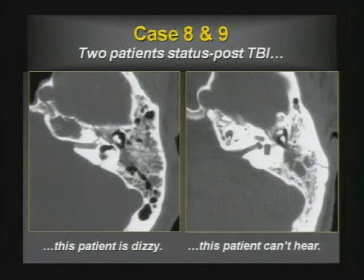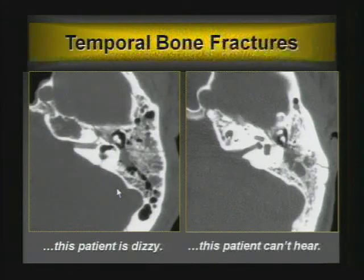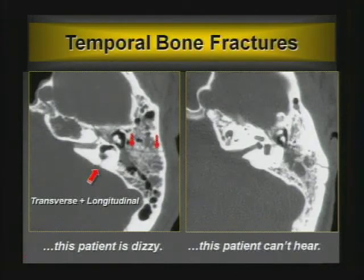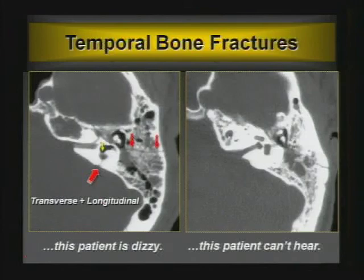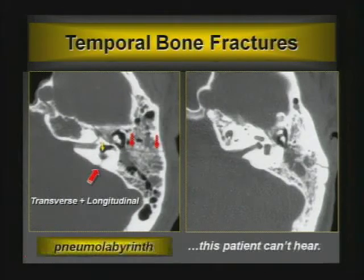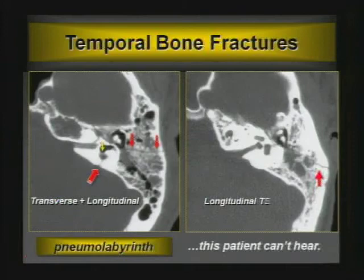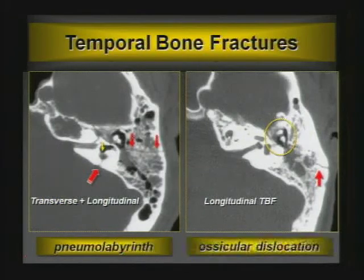Cases 8 and 9: two patients with temporal bone fractures — one dizzy, one can't hear. One has a longitudinal temporal bone fracture oriented parallel to the long axis of the petrous bone; the other has a transverse temporal bone fracture. Beyond just seeing the fracture, consider what it's traversing. One case shows a pneumolabyrinth — air in the vestibule — making patients notoriously dizzy. It can also be air in the cochlea. The other patient's longitudinal fracture reveals incudomalleal dislocation on careful inspection of the ossicles.